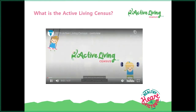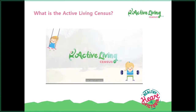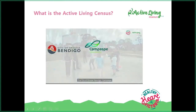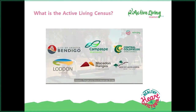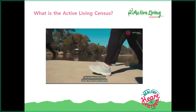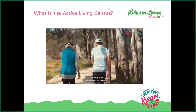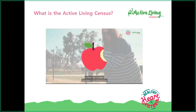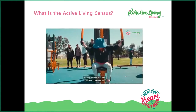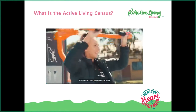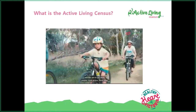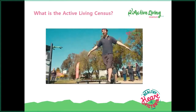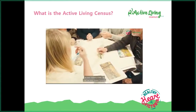In 2019, the Active Living Census was sent to households in the Lodden Campaspe region of Victoria. The region has a population of around 230,000 people and covers six local government areas: the City of Greater Bendigo, Campaspe, Central Goldfields, Lodden, Macedon Ranges and Mount Alexander Shires. The purpose was to improve our understanding of the health and well-being of people living in the region — to find out more about people's physical activity levels, what their health is like, and what we can do to help improve health outcomes in our communities.